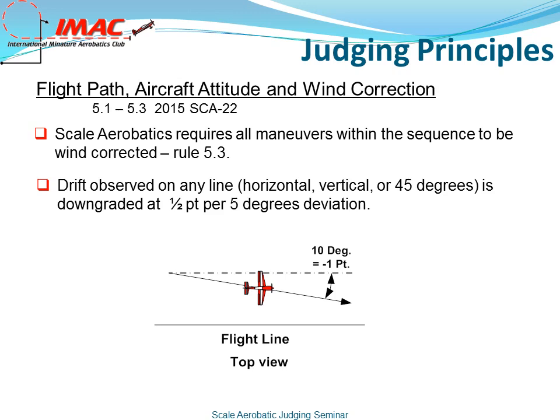Drift observed on any line — horizontal, vertical, or 45 degrees — is downgraded at a half a point per 5 degrees of deviation. In the illustration below, 10 degrees would result in a 1-point deduction.